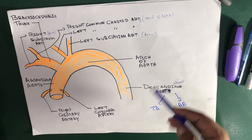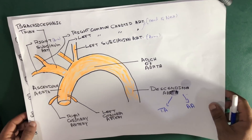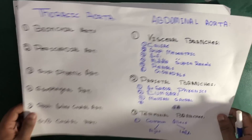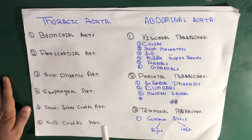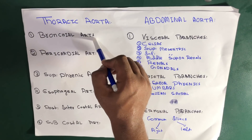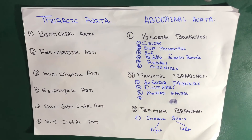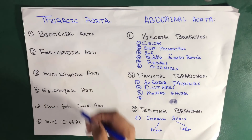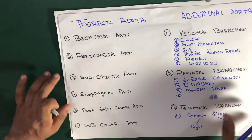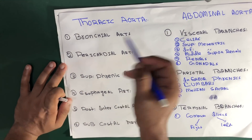Now let's discuss the branches of the descending thoracic aorta. The thoracic aorta has six branches: the bronchial artery, pericardial artery, superior phrenic artery, esophageal artery, posterior intercostal artery, and subcostal artery.